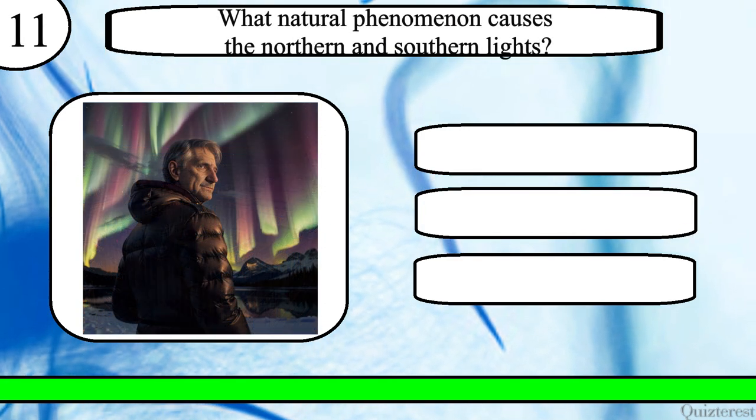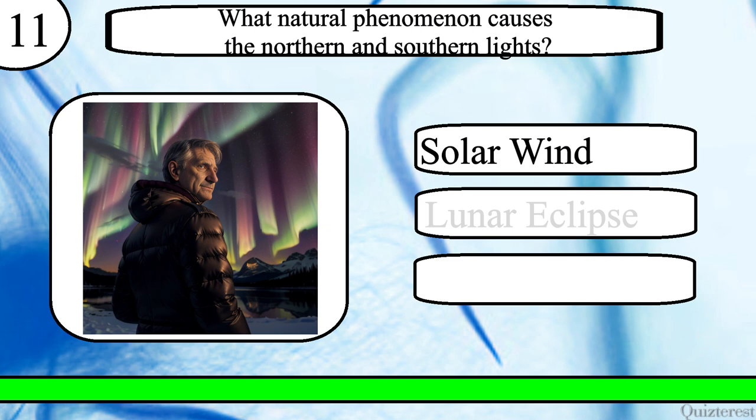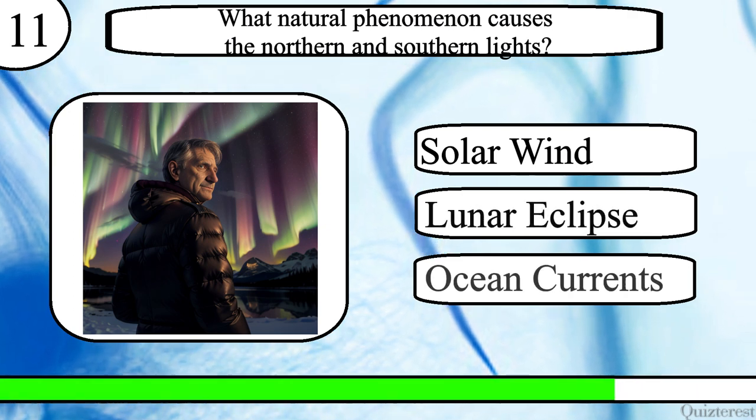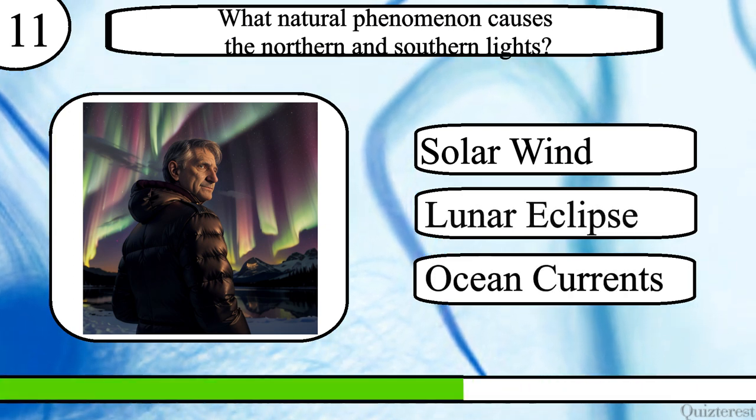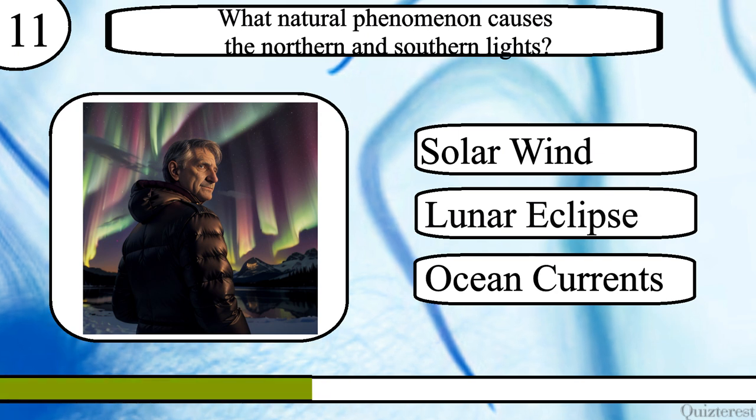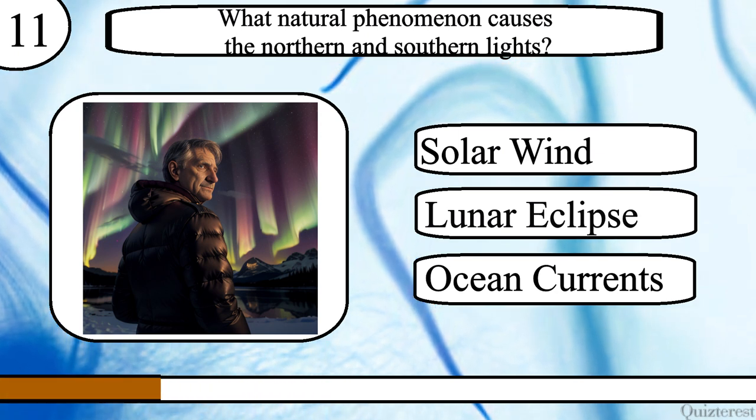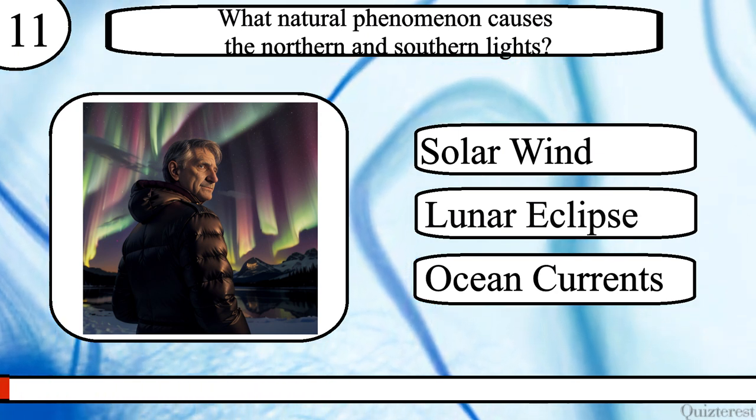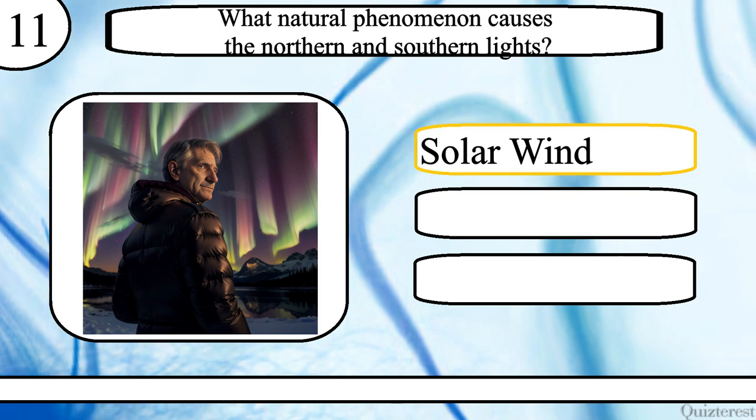Question 11. What natural phenomenon causes the northern and southern lights? Solar wind, lunar eclipse or ocean currents? The correct answer is solar wind.